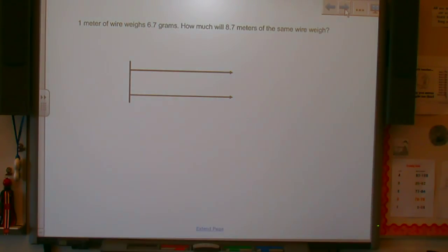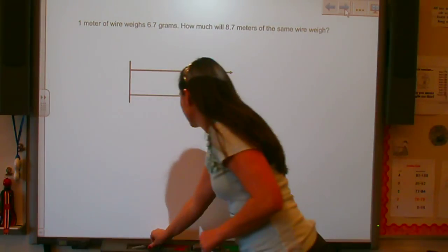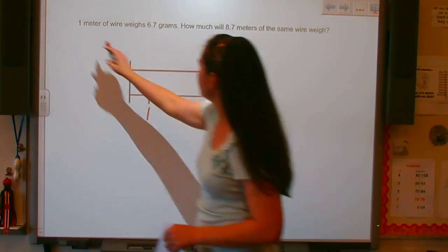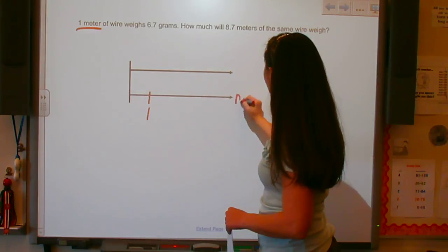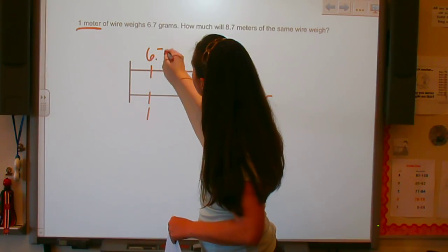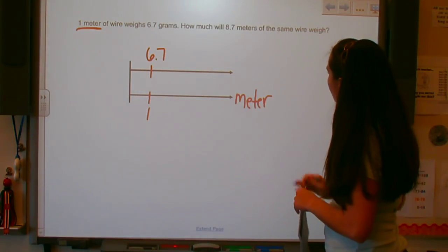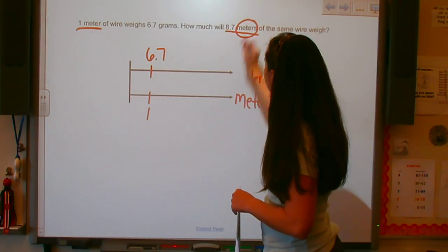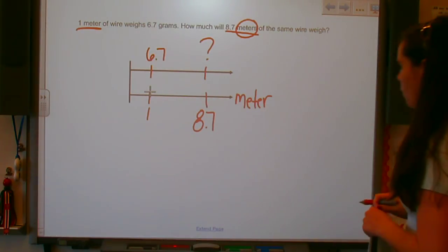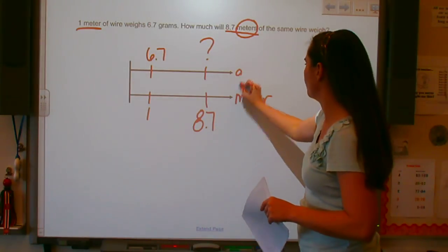One meter of wire weighs 6.7 grams. How much will 8.7 meters of the same wire weigh? So again, I am going to put my one on the bottom line. It says one meter, which means this bottom line is for meters. So one meter weighs 6.7. How much will 8.7 meters be? So this 8.7 is meters, it will go on the bottom and we do not know our weight.